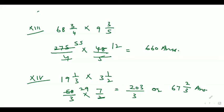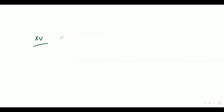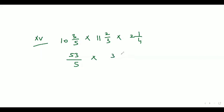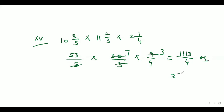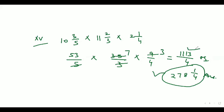Now let's move to the last part, which is the fifteenth part. The fifteenth part is 10 whole 3/5 into 11 whole 2/3 into 2 whole 1/4. So 10 whole 3/5 can be written as 53/5, 11 whole 2/3 can be written as 35/3, and 2 whole 1/4 can be written as 9/4. After cancellation, our answer comes out as 1113/4 or 278 whole number 1/4.